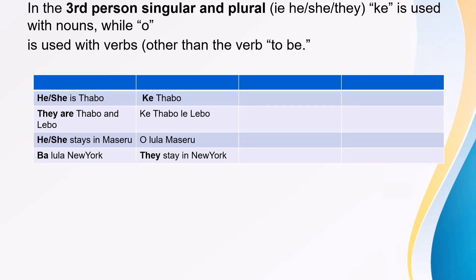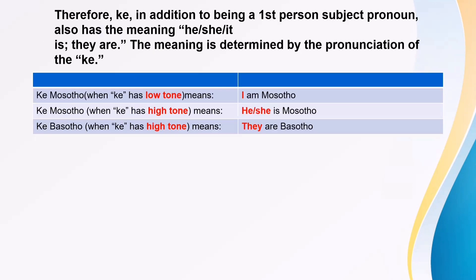If you have already checked the previous lessons for pronouns, you'll see the similarities in these. Therefore, "ki," in addition to being a first-person subject pronoun, also has the meaning he, she, it — and "ba" means they, are. But the meaning is determined by the pronunciation of "ki," like I pronounced earlier on the first slide.